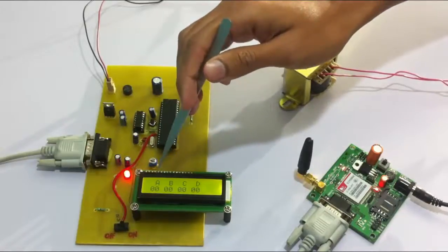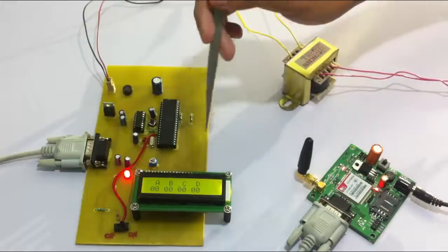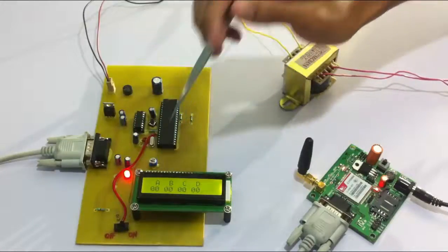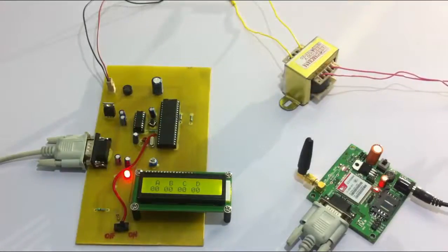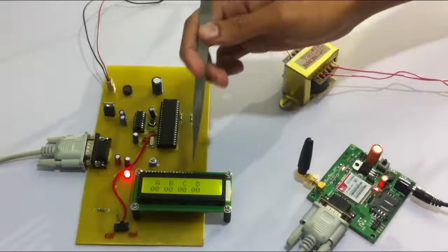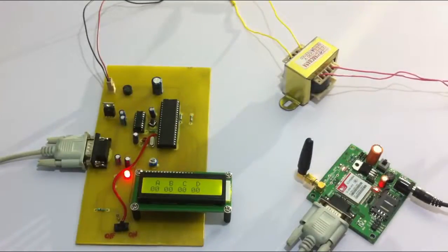So if a user sends an SMS with the alphabet A, a vote is counted for candidate A, similarly for B, C and D. So let's check how the system works and let's send an SMS message with A.